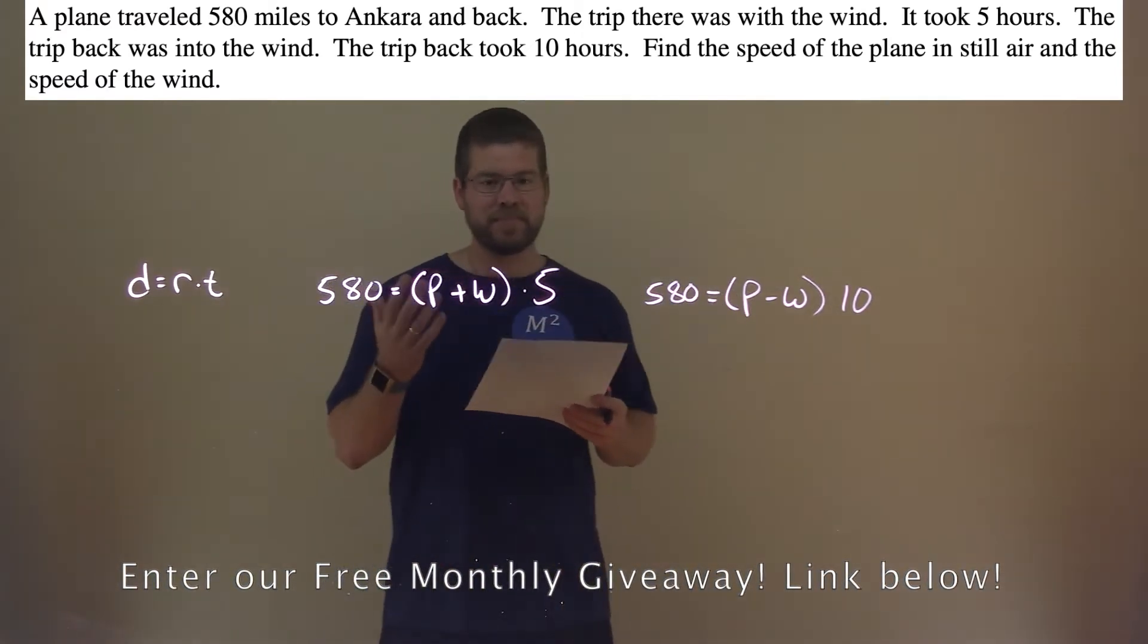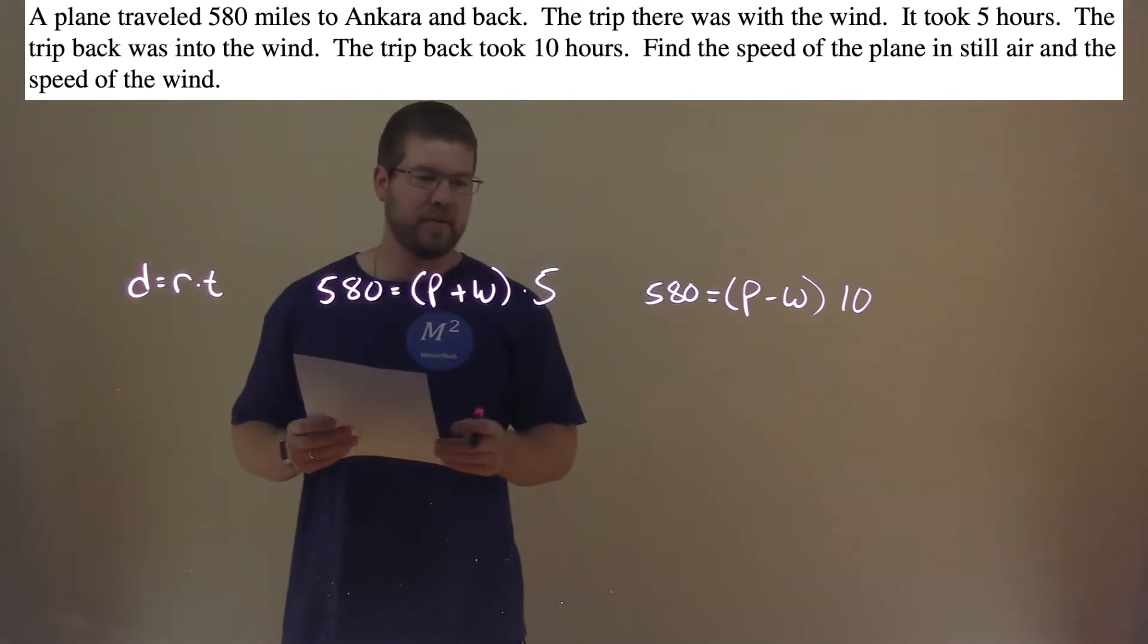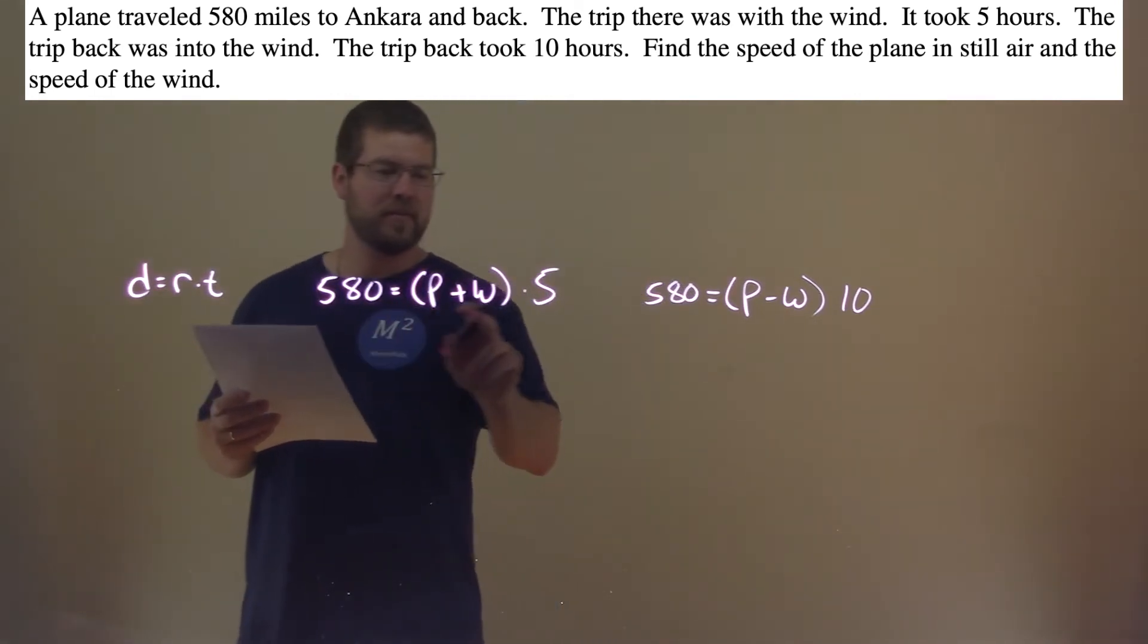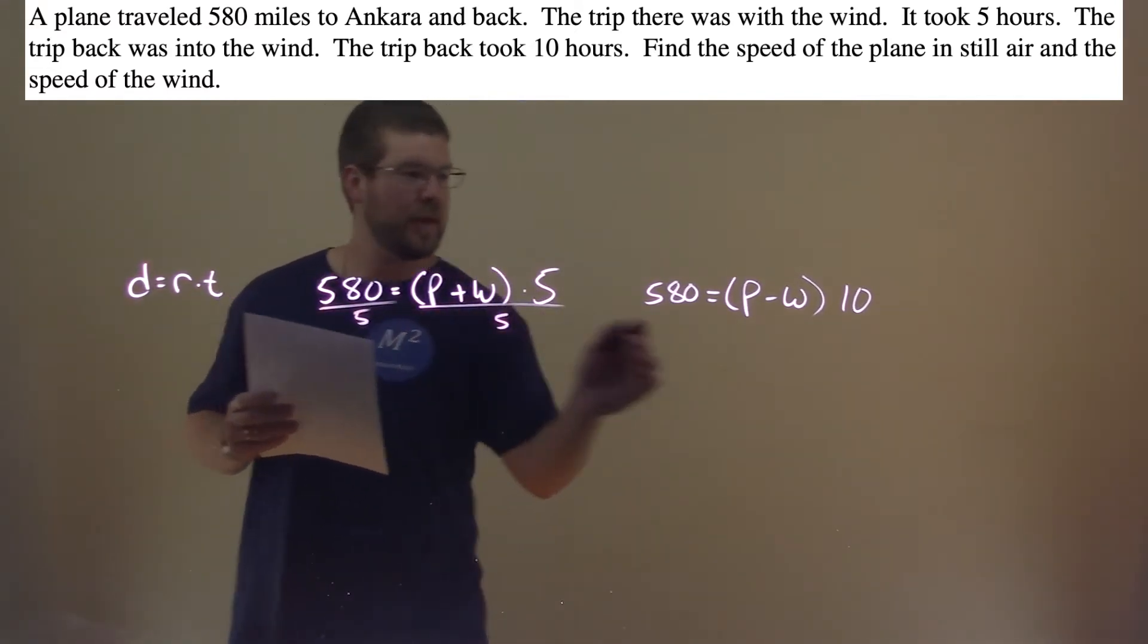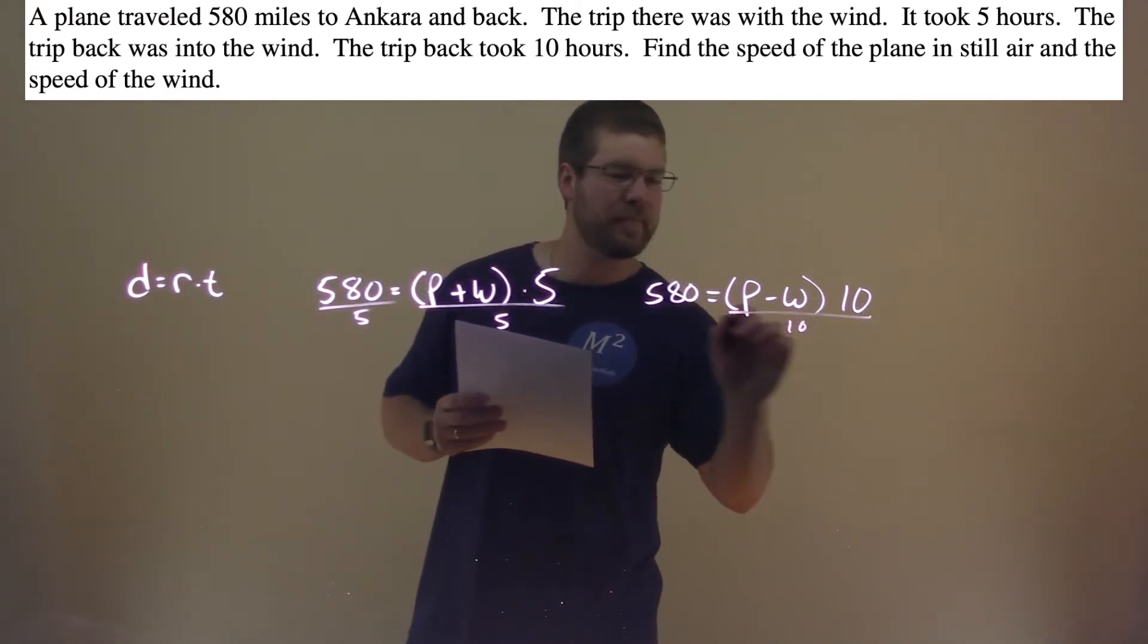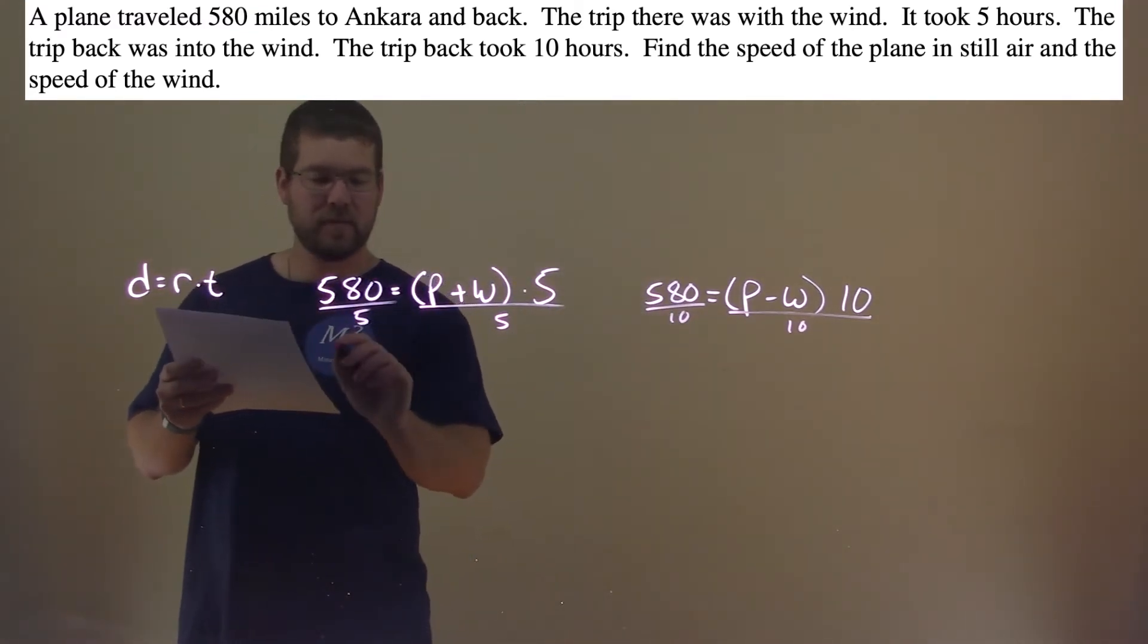So now what we want to do is we're going to solve for our variables. We have our system of equations. The first thing I'm going to do is let's get this a little easier. I'm going to divide both sides by 5 here, and this side, both sides, by 10.